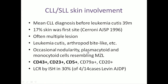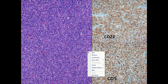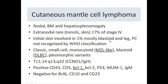Suspect CLL if there is co-expression of CD23 and CD5. Cutaneous mantle cell lymphoma is extremely rare — only a handful of cases reported initially in the skin. Most of those cases involve the leg and have a blastoid presentation, creating a big differential diagnosis with leg-type lymphoma. BCL1 or cyclin-dependent D1 will be very important to diagnose those cases.